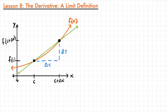Welcome back. It is now time to look at one of the most important concepts in all of calculus: the derivative. And it all starts with the tangent line problem that maybe you've heard about before. What a derivative is, is a representation of the slope of a function at a particular point.